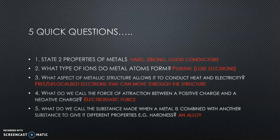Number two: what type of ions do metal atoms form? When a metal atom forms an ion, it forms a positive ion because it loses its outer shell electrons - because it's losing negative charges, it becomes positive. Number three: what aspect of the structure allows it to conduct heat and electricity? The fact that there are free or delocalized electrons that can move through the structure. So when the metal atoms form these positive ions within the metal structure, those electrons that they've lost move through the structure. Number four: what do we call the force of attraction between a positive charge and a negative charge?